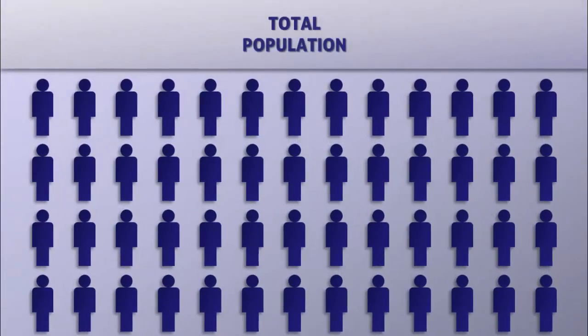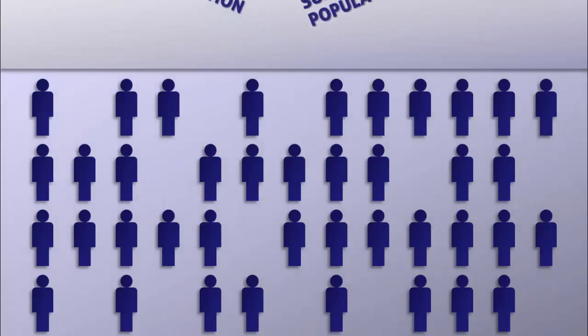When calculating incidence, we need to know how many people developed the condition during a specified period of time. In order to properly calculate incidence, we need to exclude those individuals who already have the condition and those who for whatever reason cannot develop it.